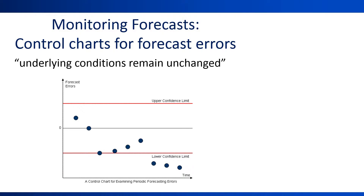Monitoring forecast errors can be done using a tool from quality control called control charts. The control chart includes upper and lower control limits, which are based on the forecast error distribution. We can use the validation period forecast errors to compute, say, the 5th and 95th percentiles, and set those as our control limits. As new forecasts are made and new data arrives, we draw their forecast errors on the control chart. Too many points exceeding the control chart limits indicate that we should inspect our forecasting model.